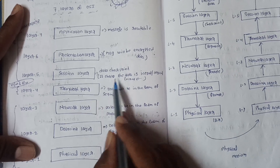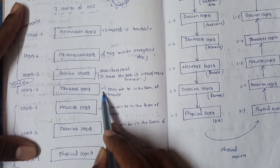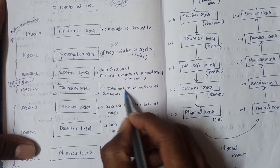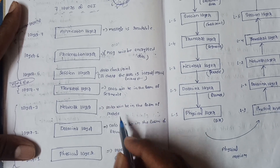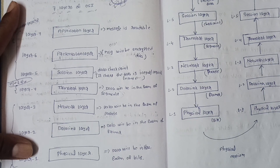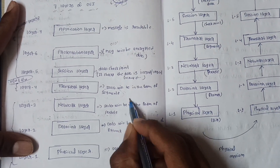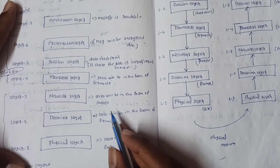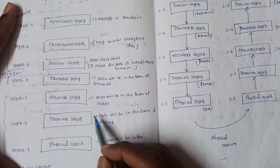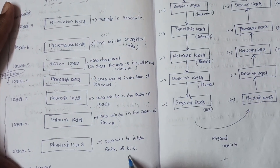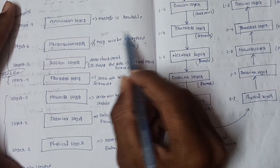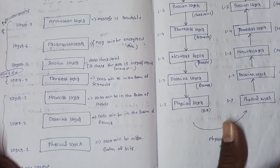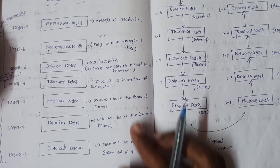The Transport Layer breaks data into segments. Then the Network Layer receives those segments and converts data into the form of packets. The Data Link Layer converts data into frames. Finally, the Physical Layer transmits data in the form of bits — this is the encrypted data sent at the lowest level.